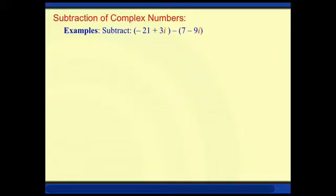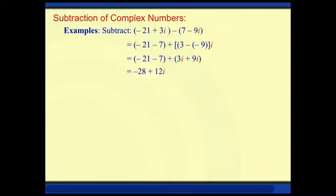We have negative 21 plus 3i subtracted to 7 minus 9i. Therefore, we have negative 21 minus 7 plus 3 minus negative 9 parenthesis i. By combining like terms and simplifying our expression, we have negative 21 minus 7 plus 3i plus 9i. So our final answer is negative 28 plus 12i.